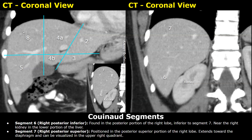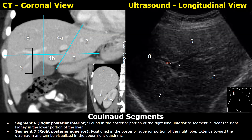In the coronal images, when you see the kidney and the spine, the upper half of the liver will be segment 7 and the lower half will be segment 6. When you get this longitudinal image of the liver and see the right portal vein and a U-shaped diaphragm, you can see segments 8 and 5 anteriorly and segments 7 and 6 posteriorly. Segment 7 is seen posterior to segment 8 and segment 6 is seen posterior to segment 5.